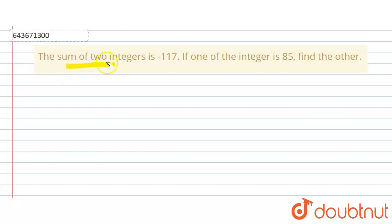the sum of two integers is -117. If one of the integers is 85, find the other.